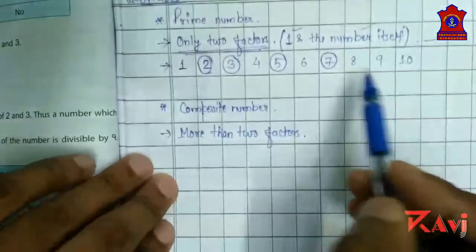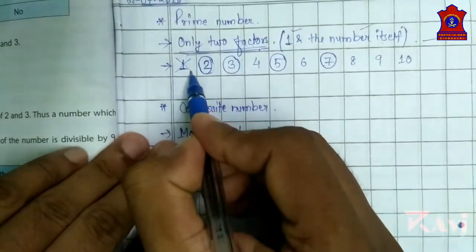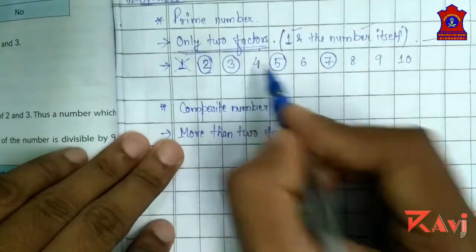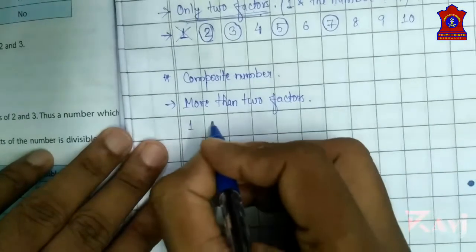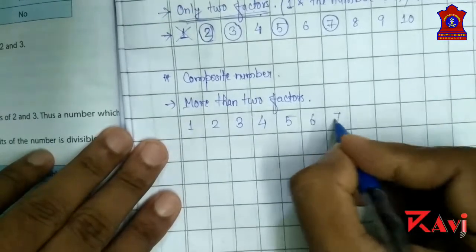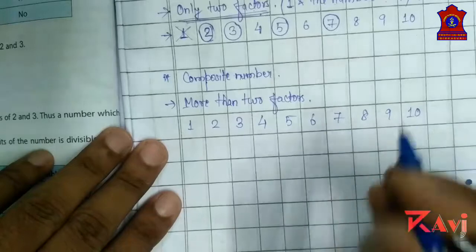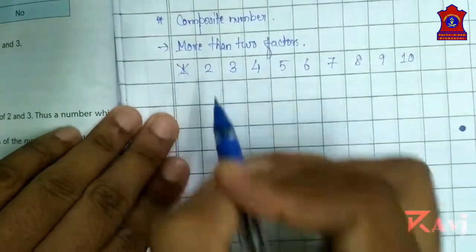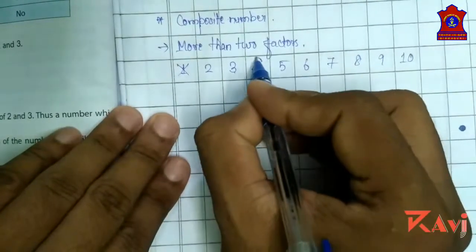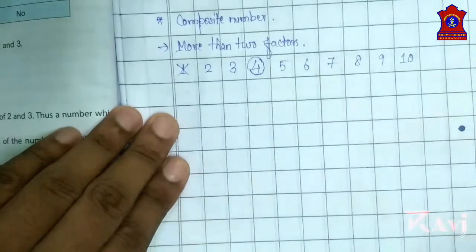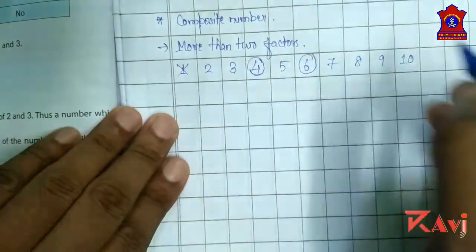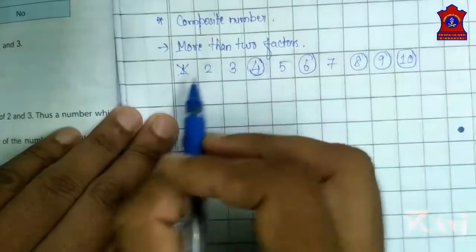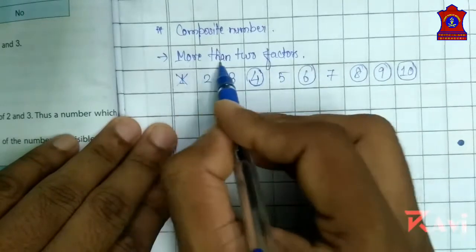Look at this example. Here, writing 1 to 10: 1 is neither prime nor composite. 2 is a prime number. 3 is a prime number. 4 is a composite number. 6 is a composite number. 8 is a composite number. 9 is a composite number. 10 is a composite number. A number that has more than two factors is known as a composite number.